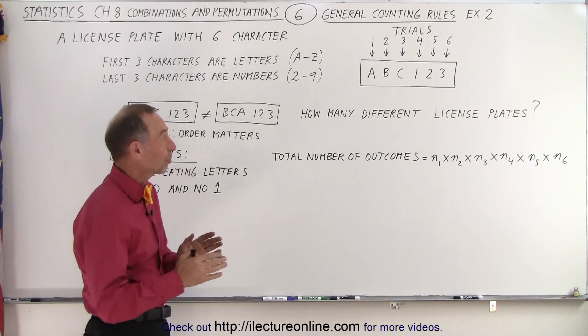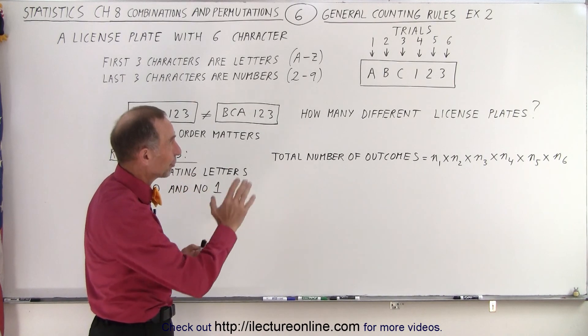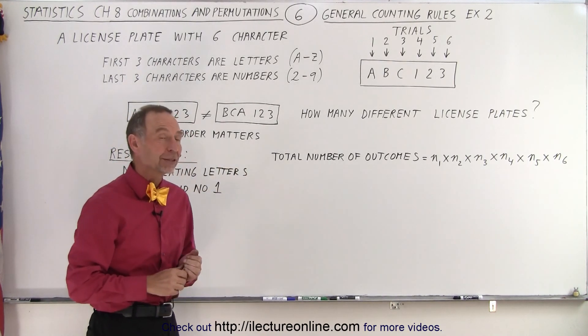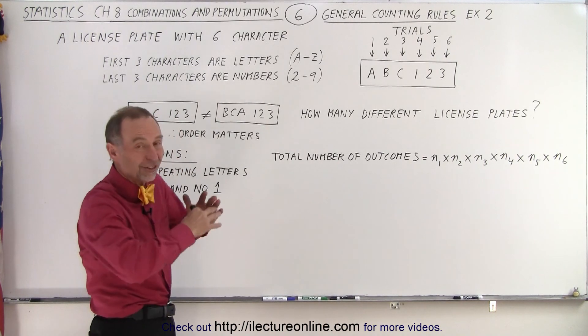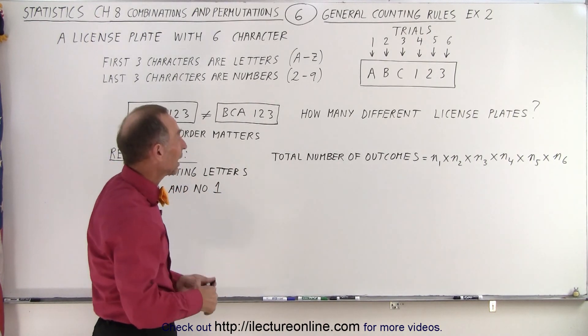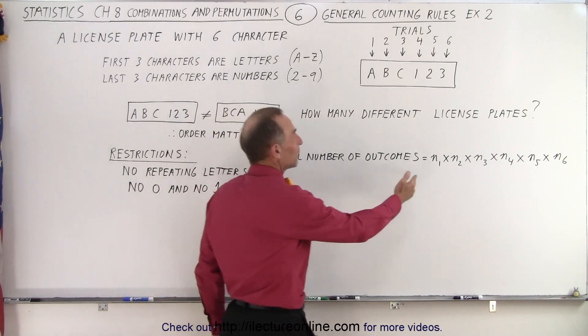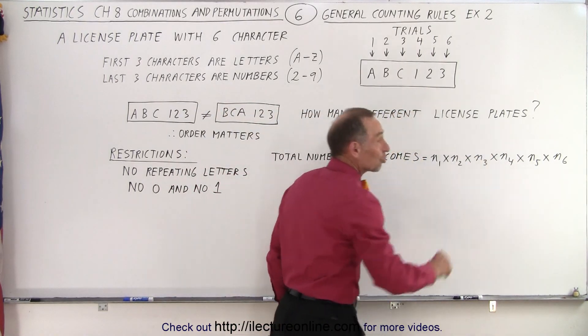Again, we're going to deal with a license plate, six characters. The first three characters are going to be alphabetical characters. The last three are going to be numerical characters. Again, there's the six trials. We know that the total number of outcomes is simply going to be the product of the outcomes of each of the trials.